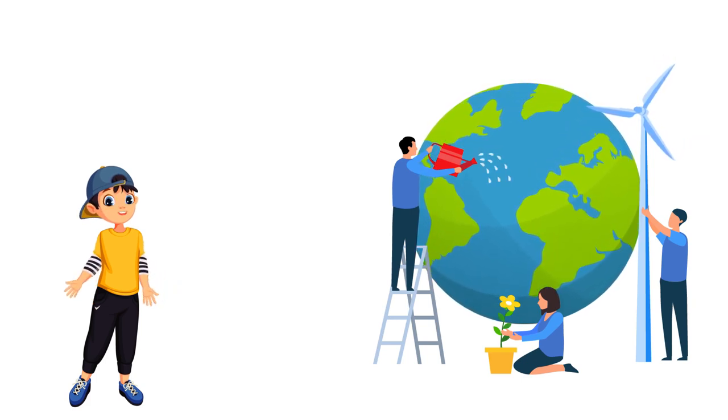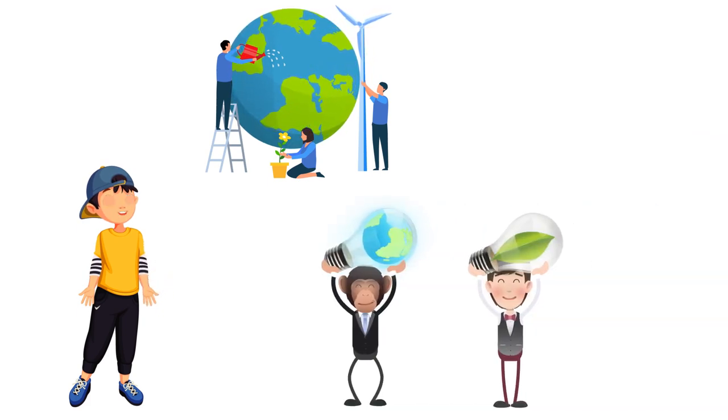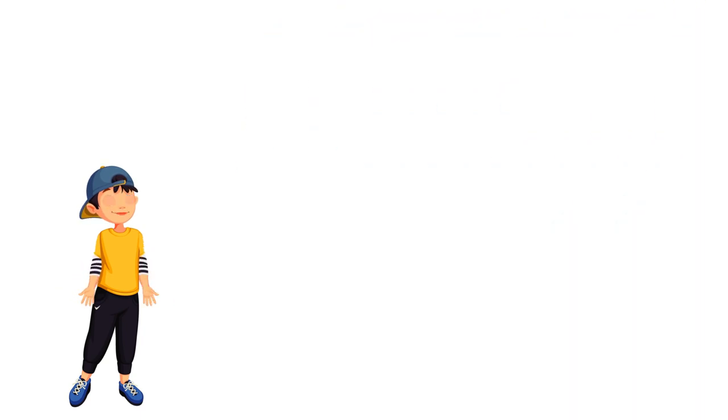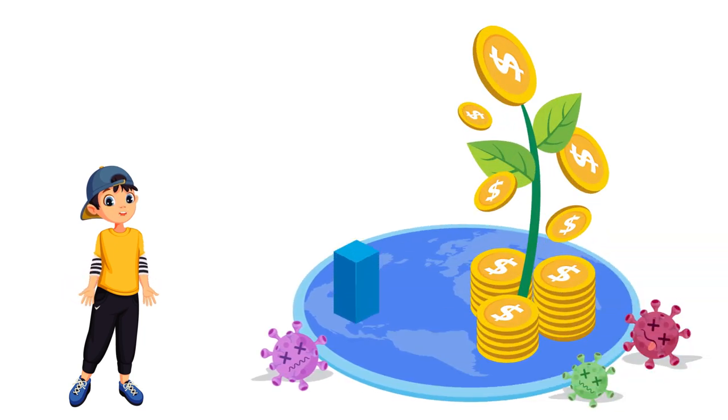Environmental sustainability means ecological integrity is maintained. All of Earth's environmental systems are kept in balance while natural resources within them are consumed by humans at a rate where they are able to replenish themselves.